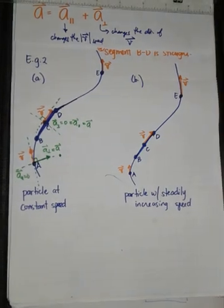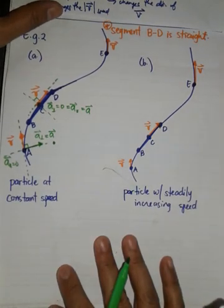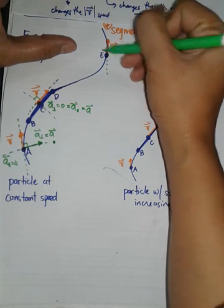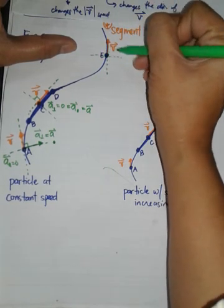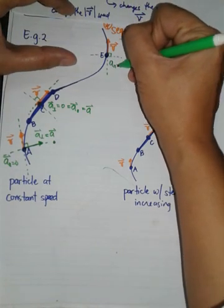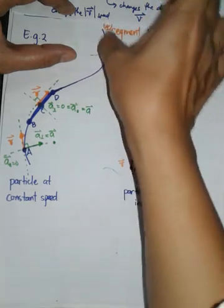So the instantaneous acceleration at point C is zero because constant speed in a straight line. There's no A parallel, no A perpendicular. What about point E? So point E, extrapolate again.